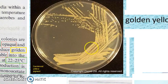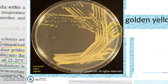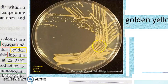On nutrient agar, you will have yellow, golden pigmentation from Staphylococcus. The pigment is carotenoid — carotenoid is the yellow pigment on nutrient agar.